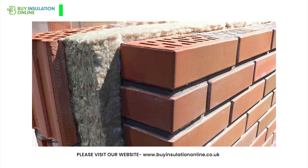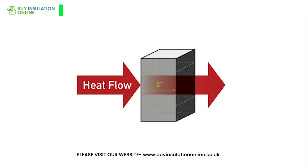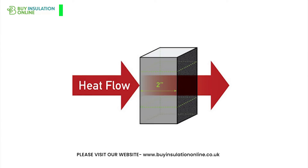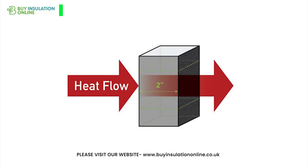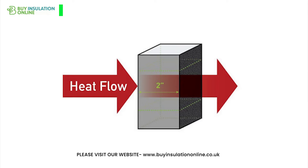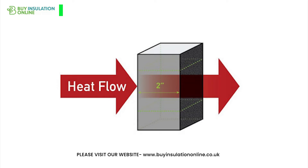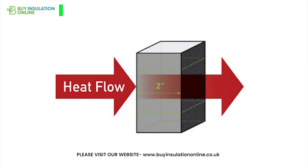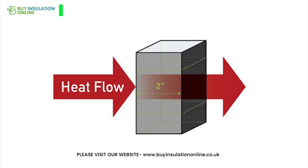U-value is also known as thermal transmittance or overall heat transfer coefficient. For example, a wall with a U-value of 0.3 watts per square metre per degree Celsius means that for every square metre of the wall, 0.3 watts of heat will pass through for every degree Celsius difference in temperature between the inside and outside of the wall.